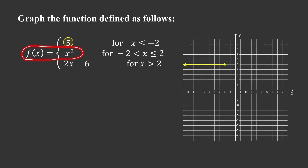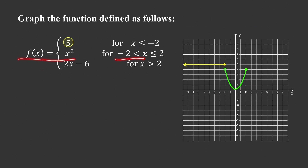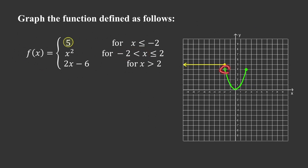The second piece is a parabola that opens up with vertex at x equals 0. It's important to plot the endpoints even if they are not included. At x equals negative 2, the y value would be 4, but since we only consider x greater than negative 2, we use an open dot there. At the right endpoint where x equals 2, since it is included in the domain, we use a solid dot.